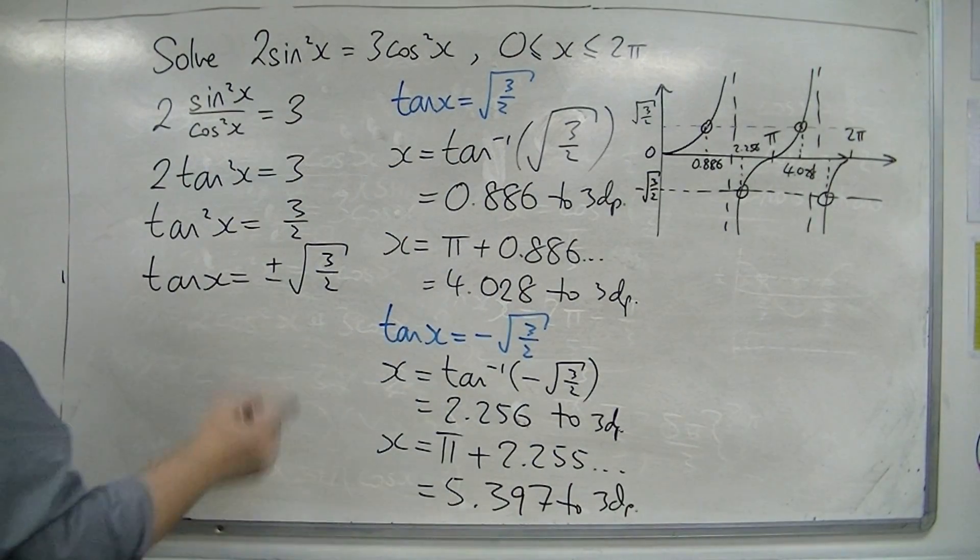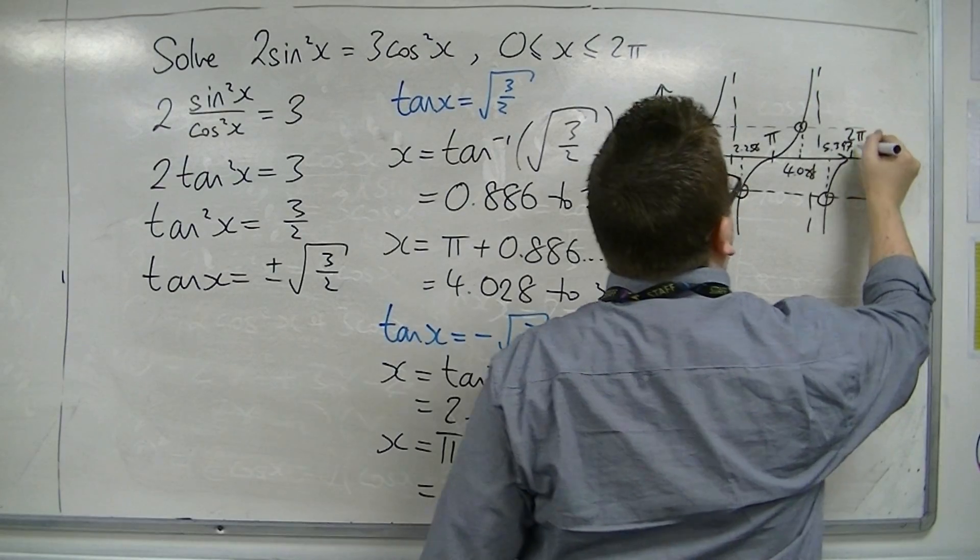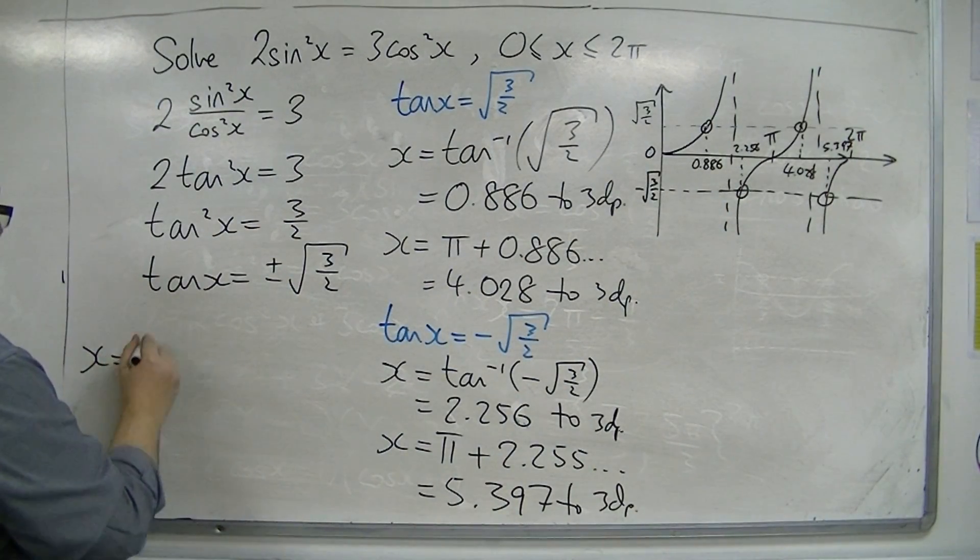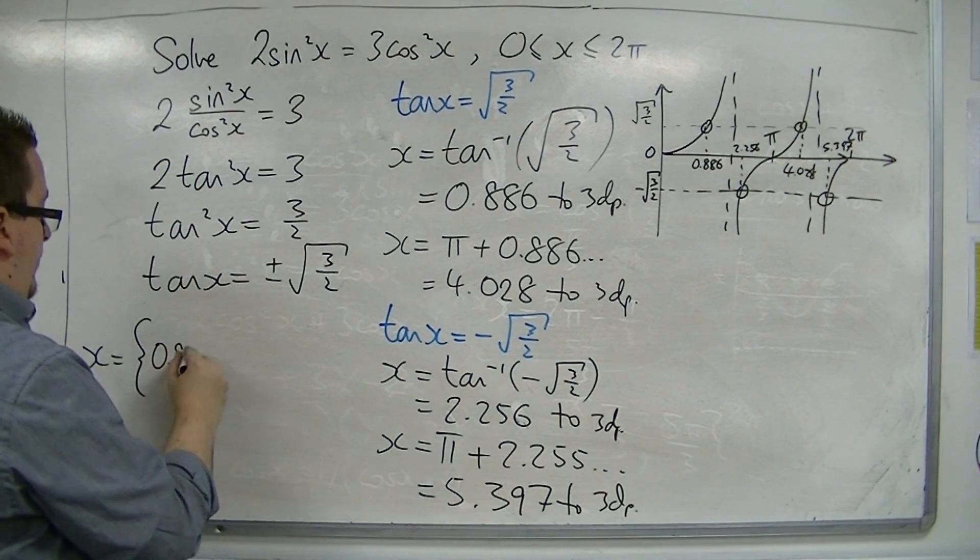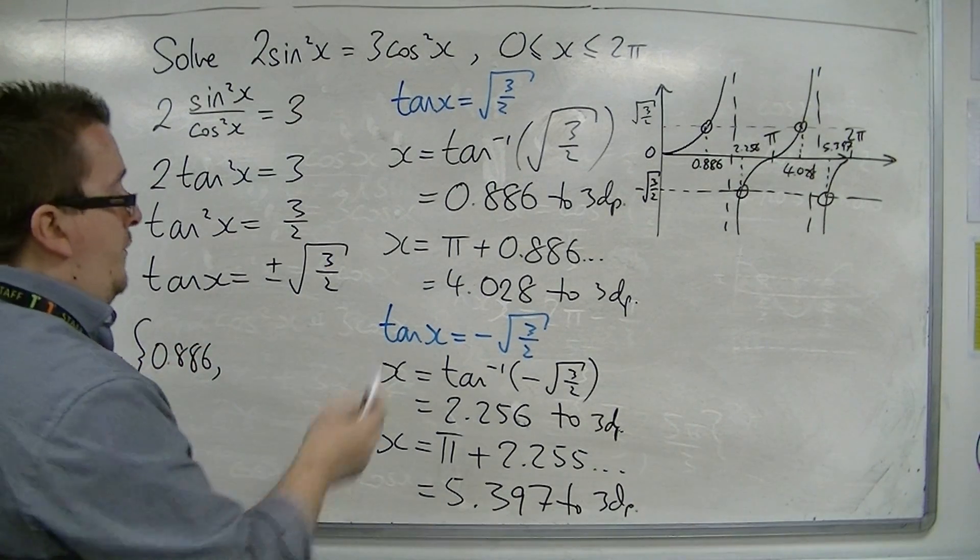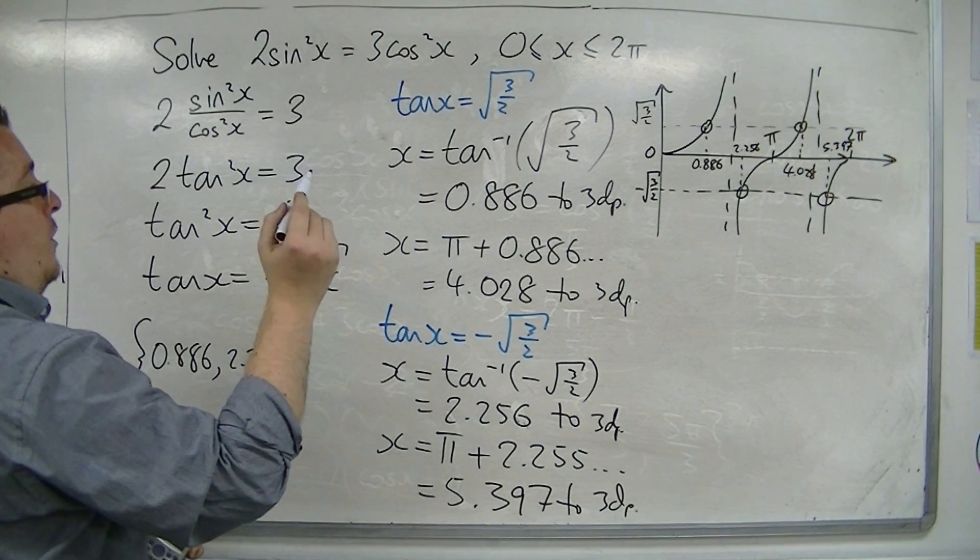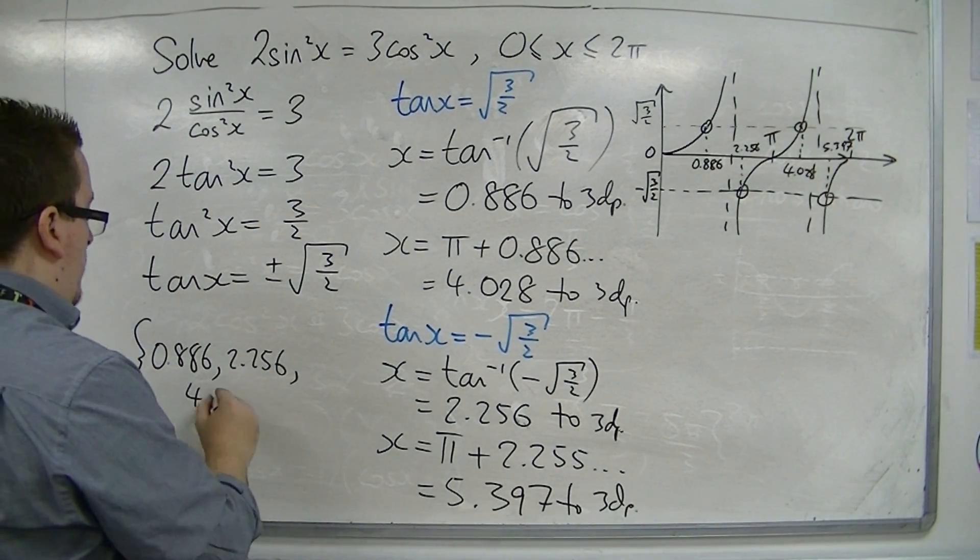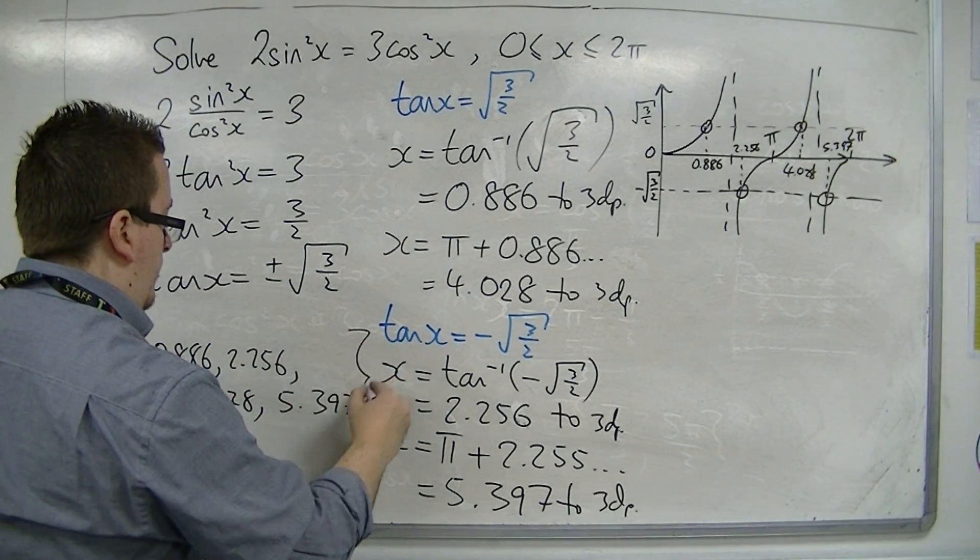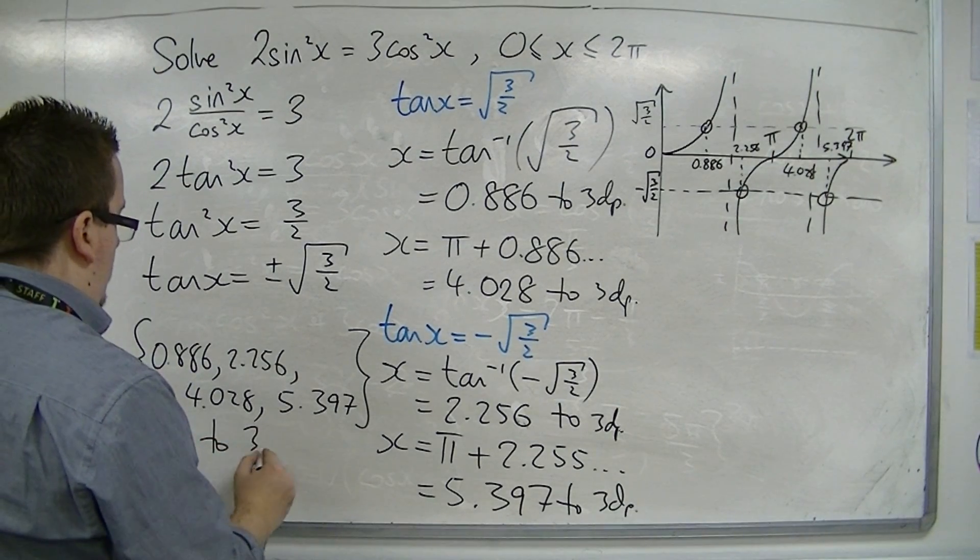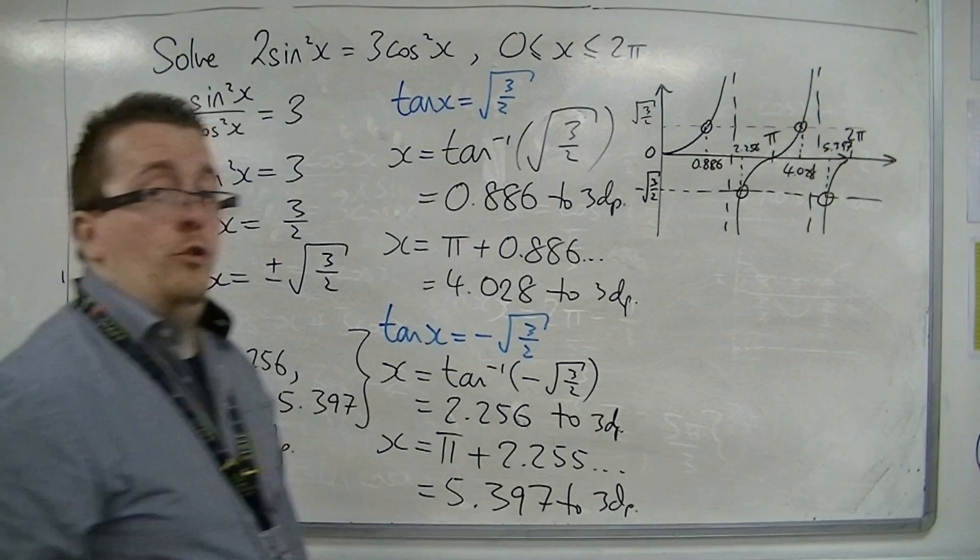We have four solutions: 0.886, 2.256, 4.028, and 5.397 to three decimal places. Those are the four solutions.